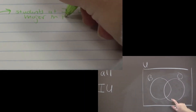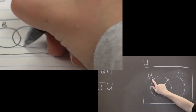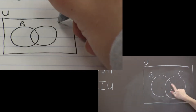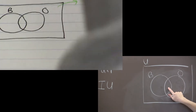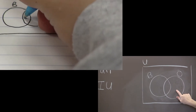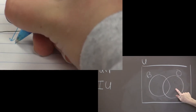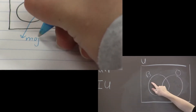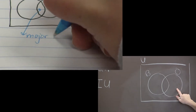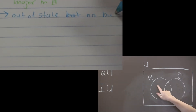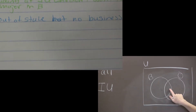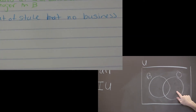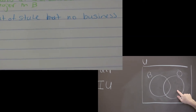Here's why. This middle region would be a student who can major in business and who lives out of state, and that can definitely happen — that's possible. But this region right here represents out-of-state students who don't want to major in business. There can be students who want to major in business and live out of state, and there can also be out-of-state students who don't want to major in business.